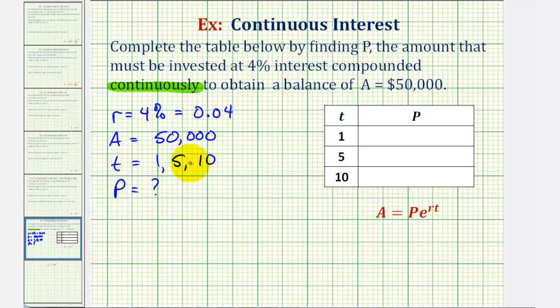So because we're trying to find P, let's solve the continuous interest formula for P. To do this, notice how we would divide both sides by E raised to the power of R times T. So on the right side now, this simplifies to one, so we just have P equals A divided by E raised to the power of R times T.